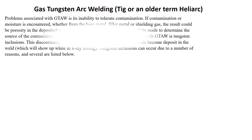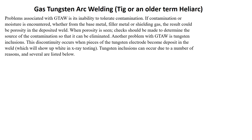Problems associated with TIG include its inability to tolerate contamination. If contamination or moisture is encountered — whether from the base metal, filler metal, or shielding gas — the result could lead to porosity in the deposited weld. When porosity is seen, checks should be made to determine the source of contamination so that it can be eliminated. Another problem with TIG is tungsten inclusion. This discontinuity occurs when pieces of tungsten electrode become deposited in the weld, which will show up on x-ray as white spots. Tungsten inclusion can occur due to a number of reasons, and several are listed below.